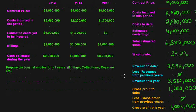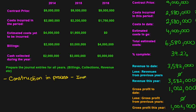The percentage of completion method has two new accounts you need to learn. The first one is called Construction in Process. Construction in Process is an inventory account that keeps track of the costs of whatever you're building, and it also keeps track of the gross profits you've accumulated on your contract.